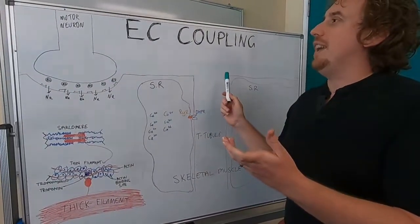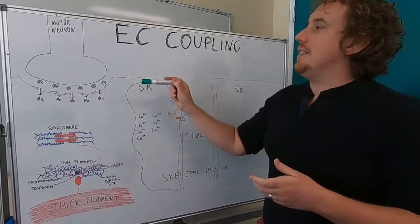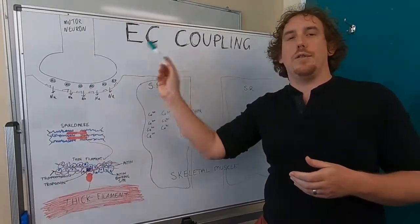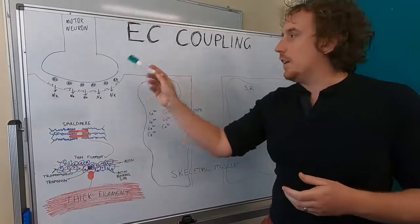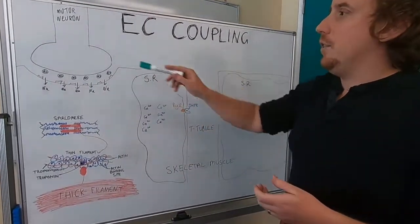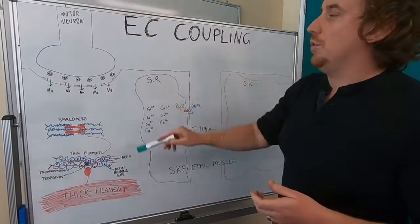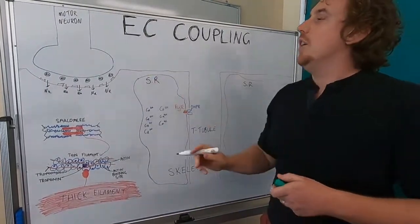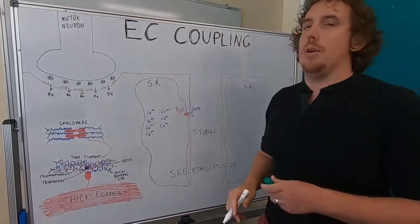Now what this is saying is, how is it that excitation or action potentials from our nervous system can cause the contraction of muscle? We're going to fill in those blanks today and talk about what causes muscle contraction, starting with that activation from the motor neuron.